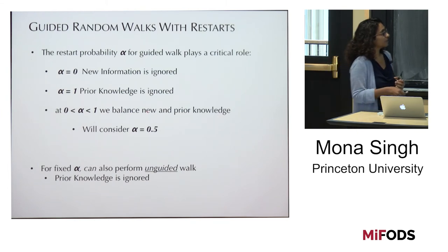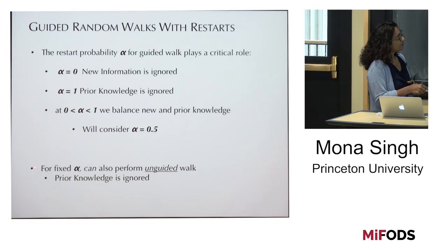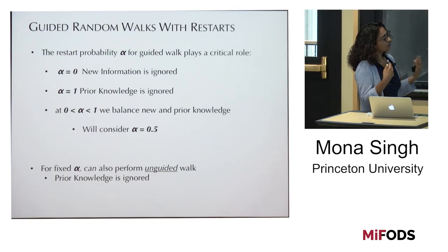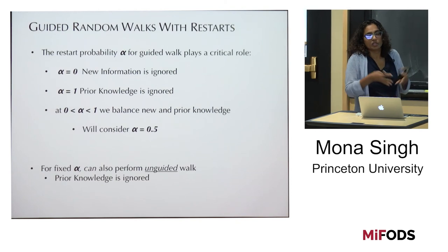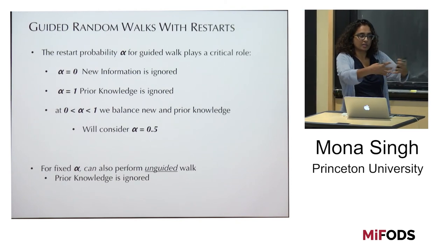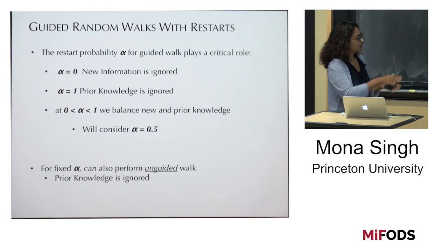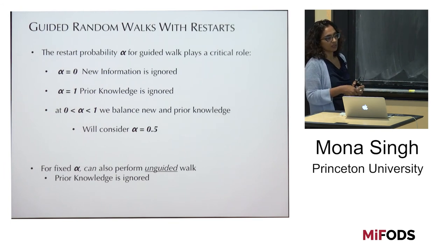When alpha equals zero, new information is entirely ignored. When alpha equals one, prior knowledge is ignored. When alpha is between zero and one, we balance new and prior knowledge — we use alpha equals 0.5. We can also perform an unguided walk for fixed alpha, which uses only new information, ignoring prior knowledge, essentially looking just at mutational frequencies.